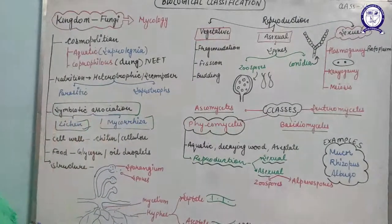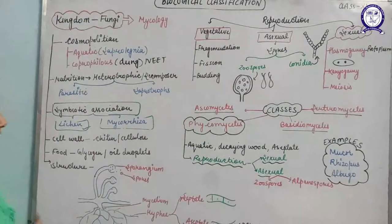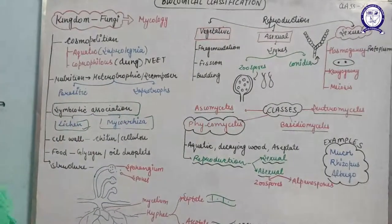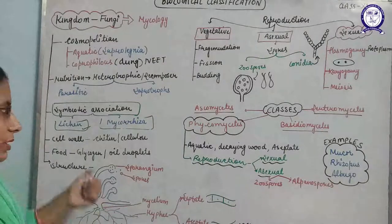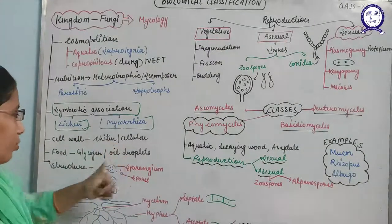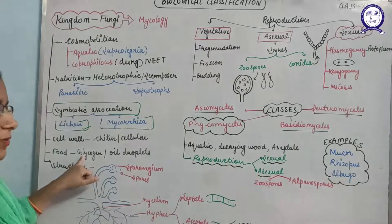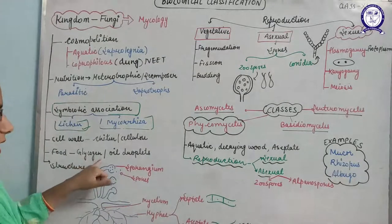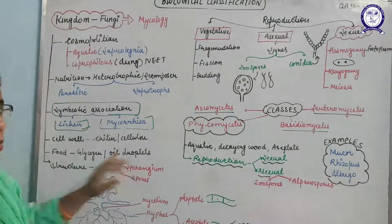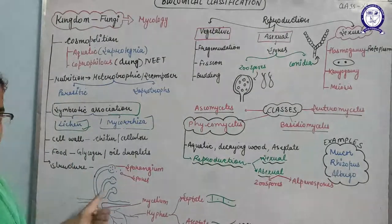The cell wall of fungus is made of chitin and cellulose, and fungus stores food in the form of glycogen or oil droplets.